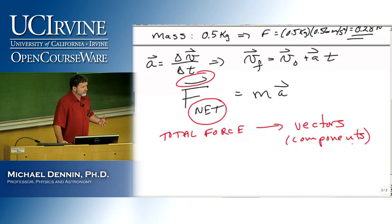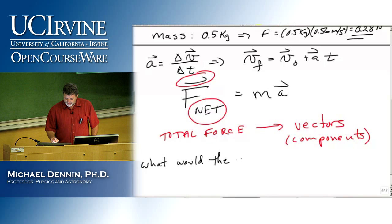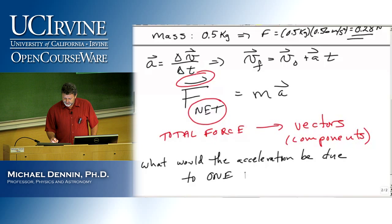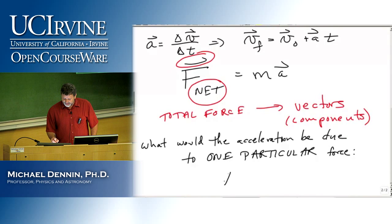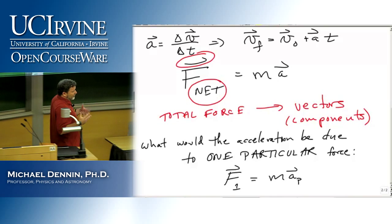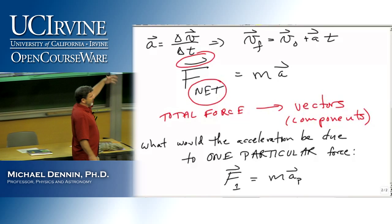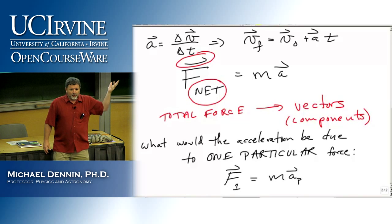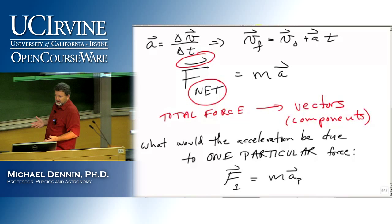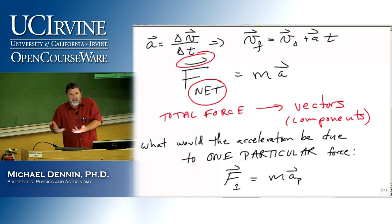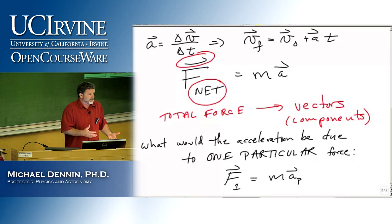Just to clarify: you will occasionally be asked what the acceleration would be due to one particular force. That is still given by F for that particular force equals MA. So if you have a bunch of forces acting on you and you only want to know what acceleration one force alone would produce, you still use F equals MA. But keep in mind, when you talk about the acceleration of the object, that only means really the total acceleration. You only have one actual acceleration, which is your total — many forces may contribute to it.